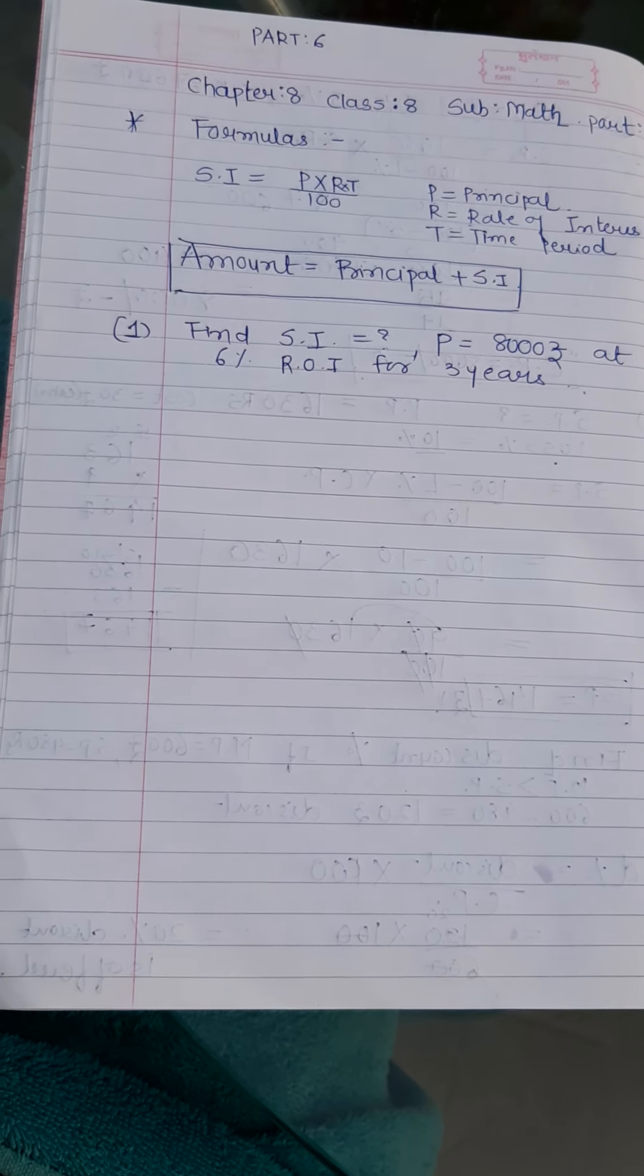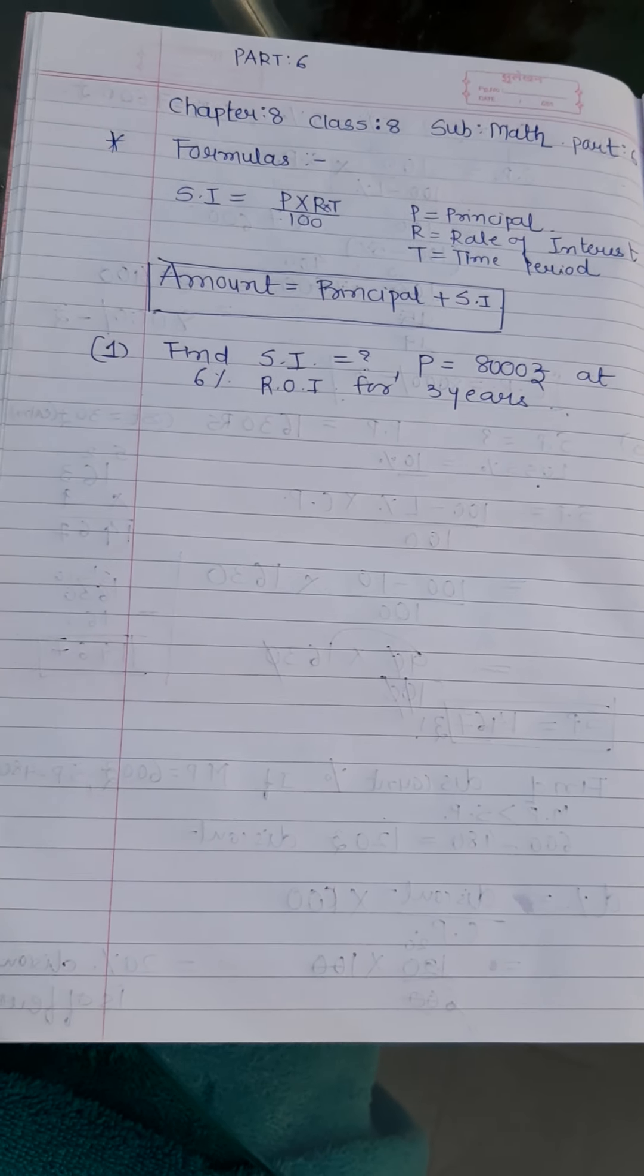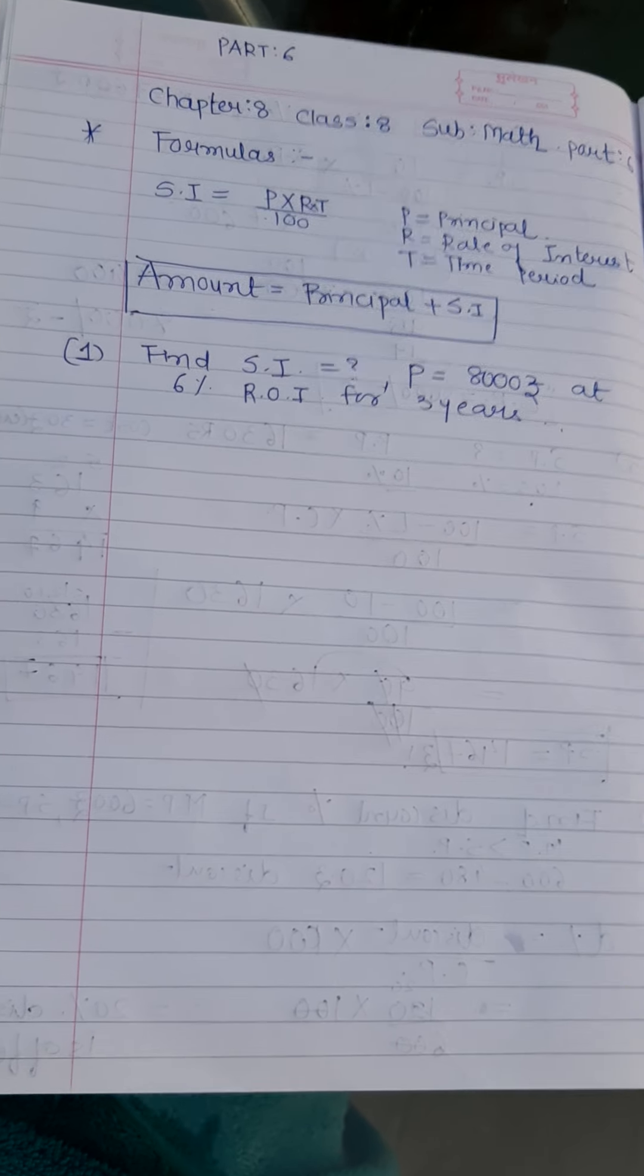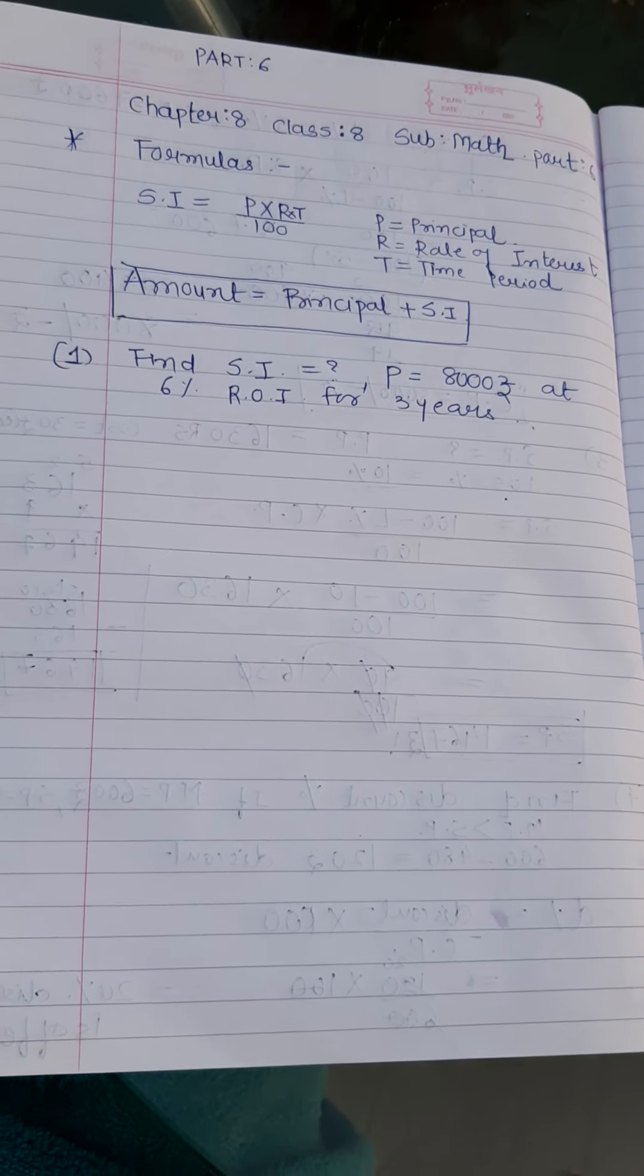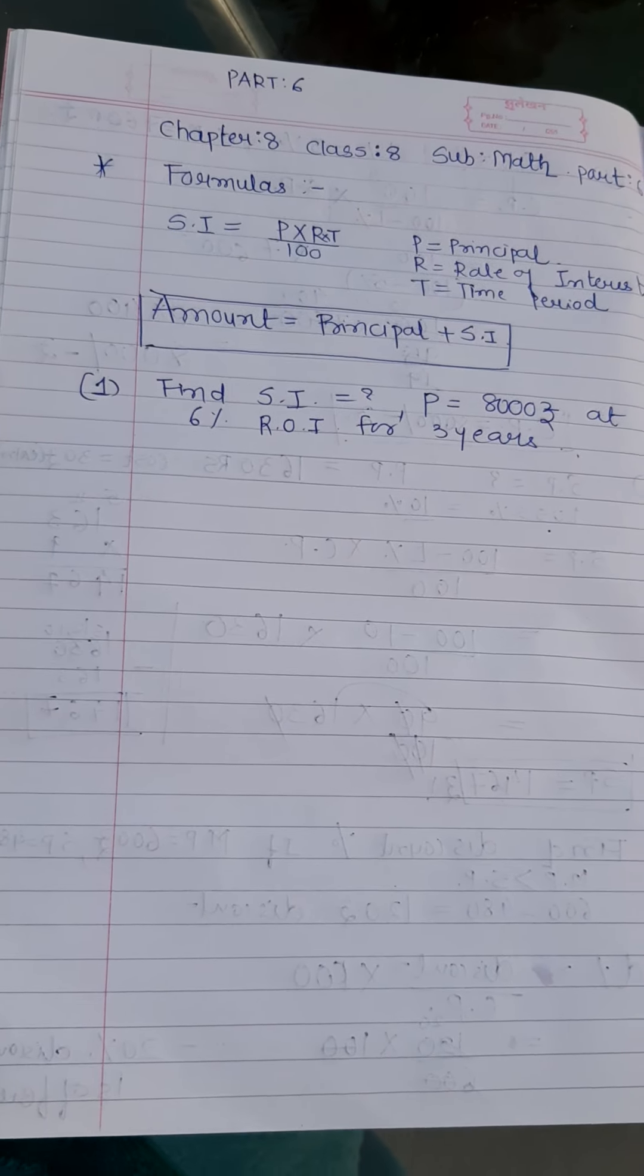So generally you get more interest with the compound interest. Let's figure it out. And the amount that is the final price that you will be receiving is your original money principal plus simple interest.